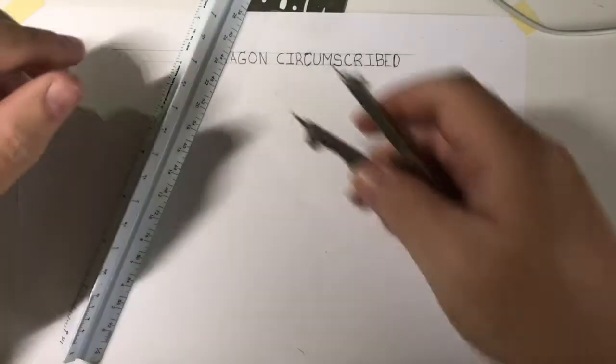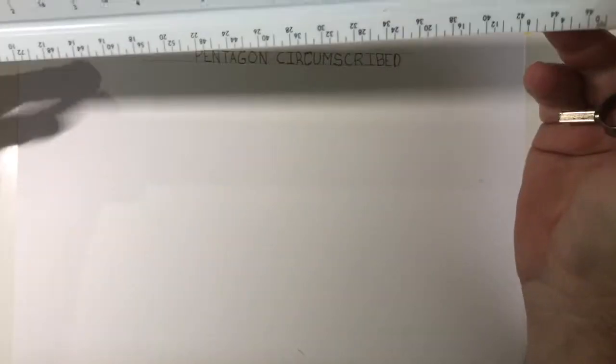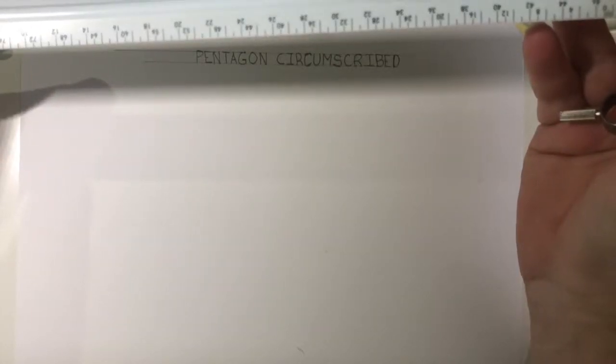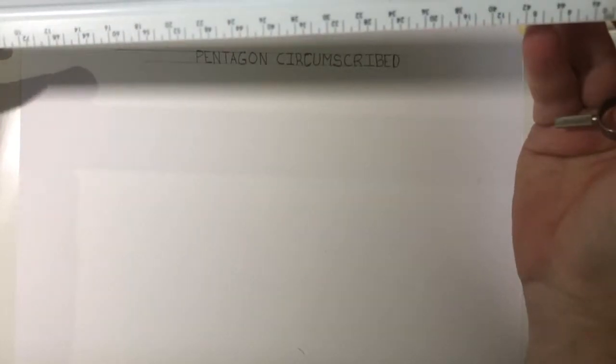Hello, in this video I'm going to show you how to draw a pentagon that is circumscribed around a circle. First thing I'm going to do is start with a four inch diameter circle using half inch scale, and I actually want to make it four feet.